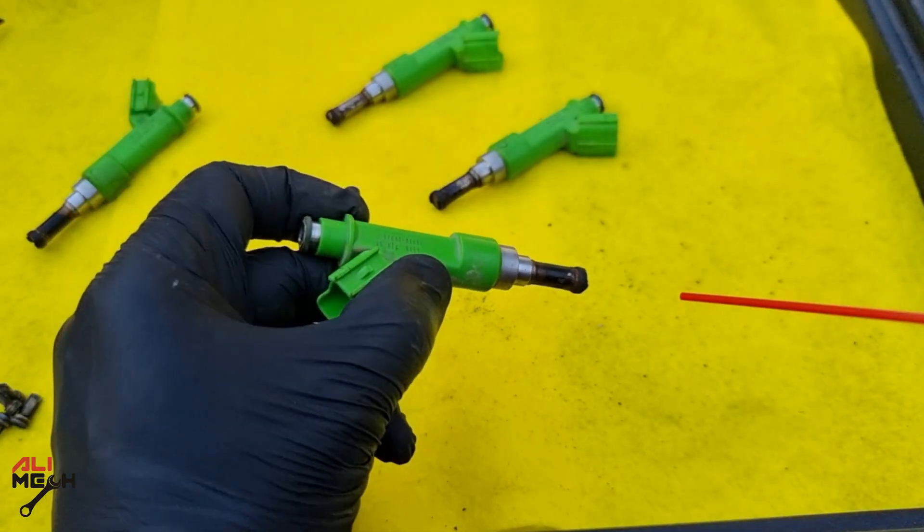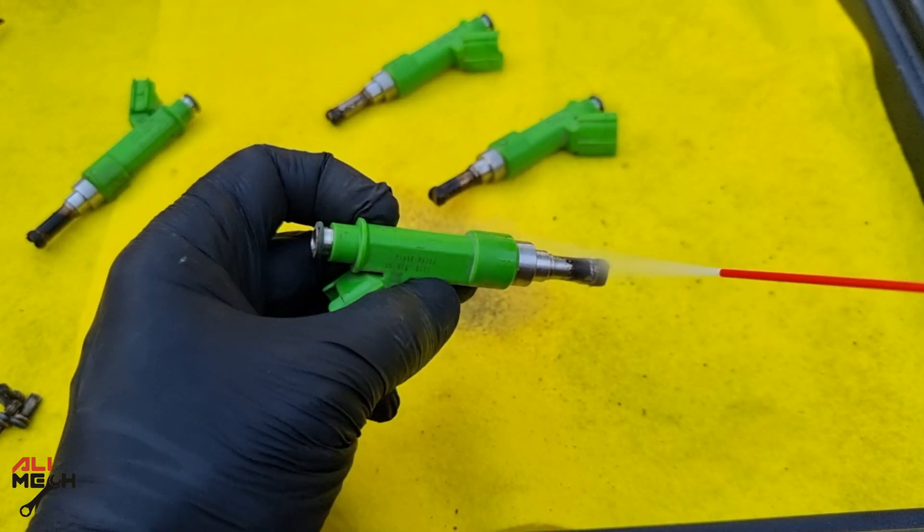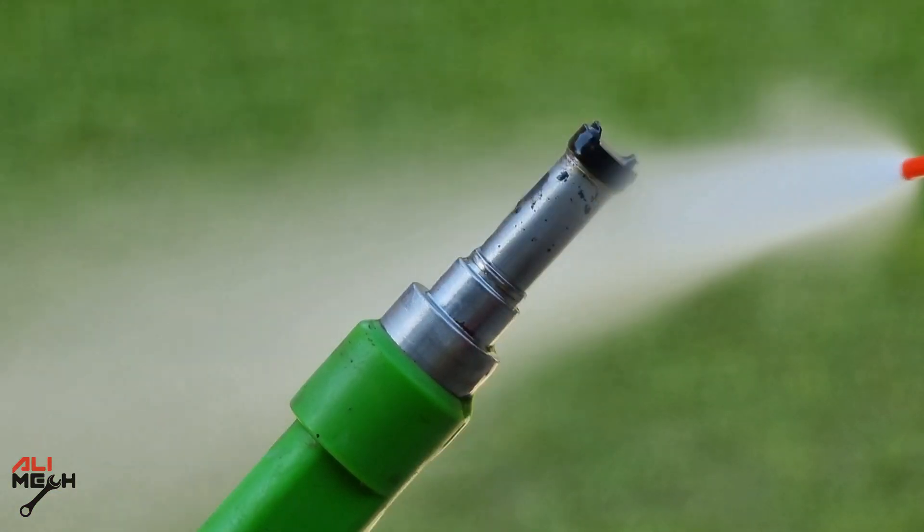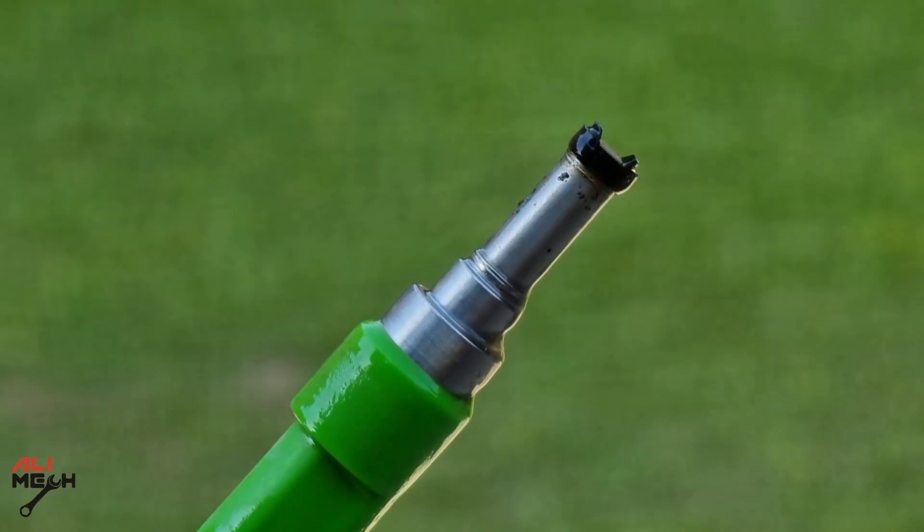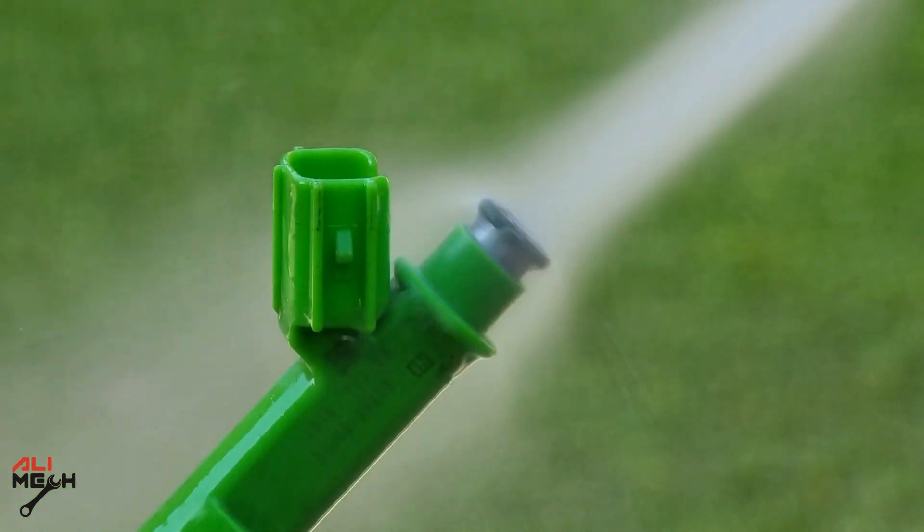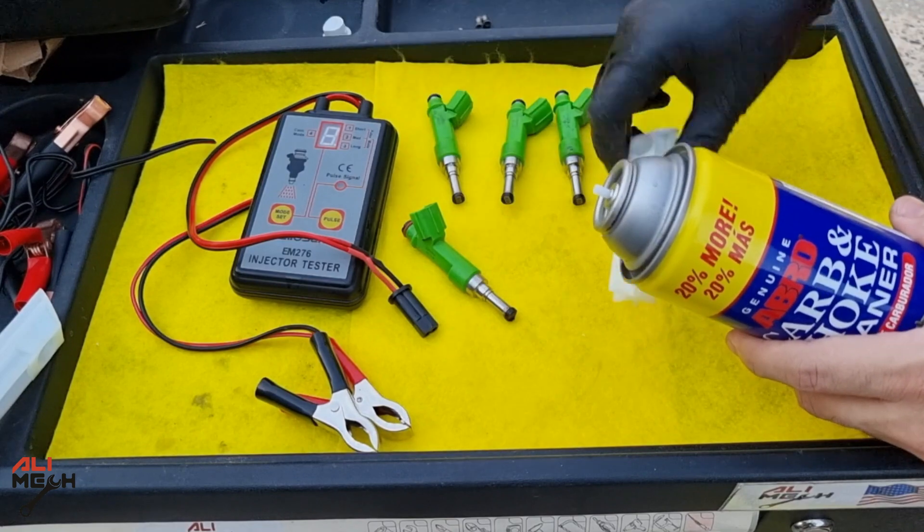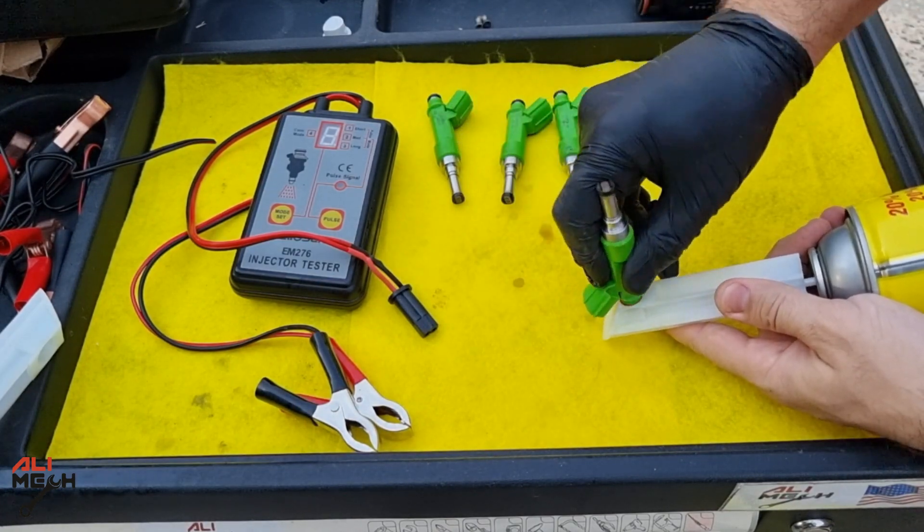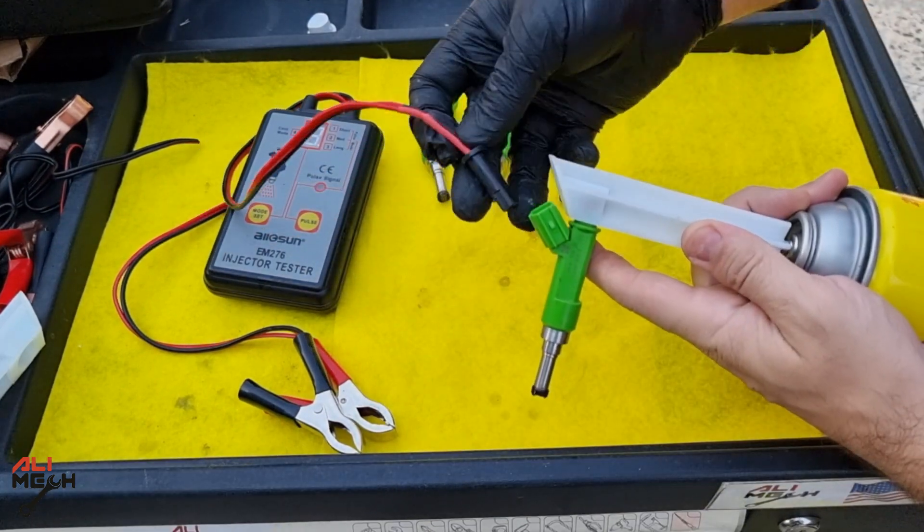I like to spray carb cleaner and clean the outside and the inside as well so I don't push the dirt inside the injector when powering up the solenoid. For using the adapter, remove the nozzle on a carb cleaner can and push the adapter on, then insert the injector and then the wire harness.